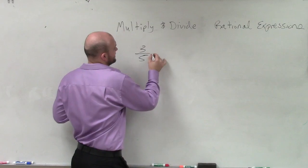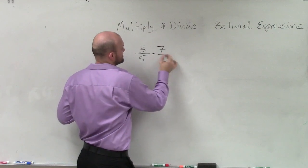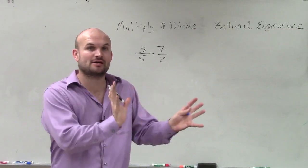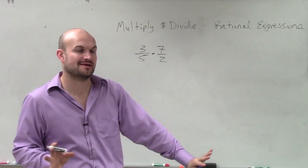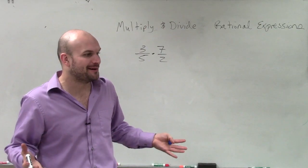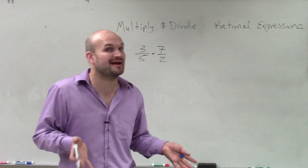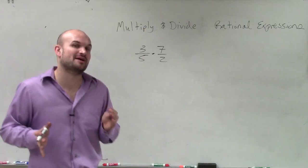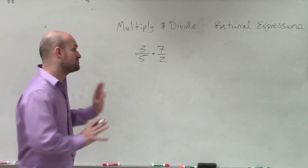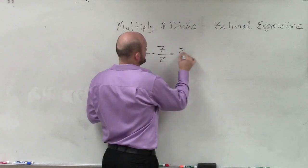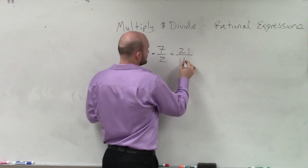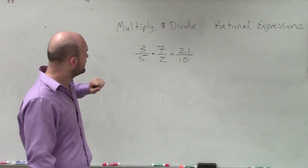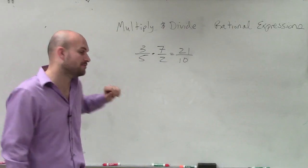If I said to multiply 3/5 times 7/2, in fractional terms this is fairly basic. When we're multiplying fractions, we just multiply across — numerator times numerator, denominator times denominator. Everybody likes multiplying fractions because it's a lot simpler than adding or subtracting with unlike denominators. When we multiply fractions, we multiply straight across. That's going to be 21 over 10. It does not matter if the denominators are the same or not for multiplying.